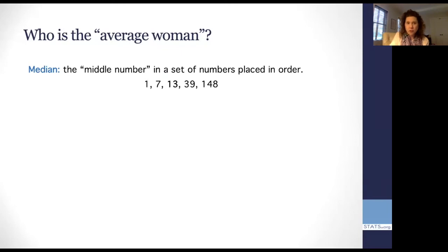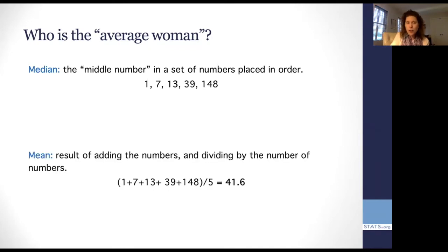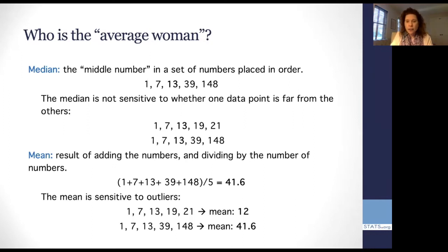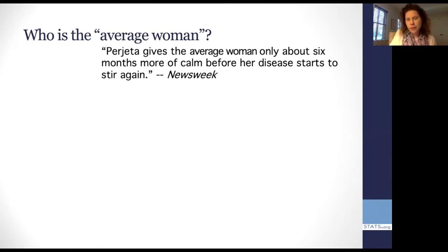So this question of what the average woman is brings up a really basic statistical concept of what we mean by the word average. We have the median, which is this middle number. So if I put a list of numbers in order here, I can just take the middle number, in this case is 13. Or I can take the mean of a set of numbers, which is when I add up those numbers, and then I divide by the number of numbers. Now the median has this wonderful feature of not being sensitive to whether there's a data point that's far from the other one. So you can see here, I finished it off with a 148 versus a 21, and it doesn't change the median. Whereas the mean is very sensitive to outliers. So this is really important because, for example, if we're going to talk about average wealth in the United States, we tend to talk about median rather than mean. Because if Bill Gates walks into the room, my salary actually doesn't go up, much as I'd like it to.